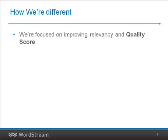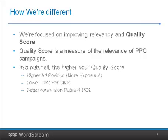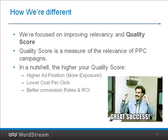WordStream is designed around improving quality score. Quality score is a measure of the relevancy of your PPC campaigns. In a nutshell, the higher your quality score, the higher your ad position, the lower your cost per click, and the better your conversion rates and overall ROI. Improving quality score is the key.